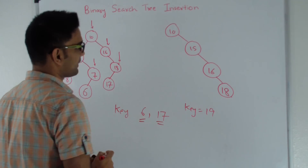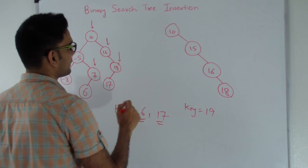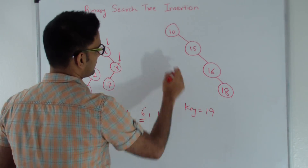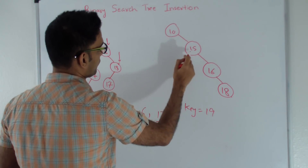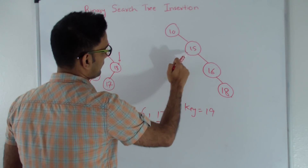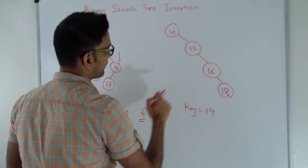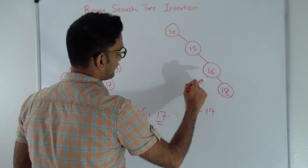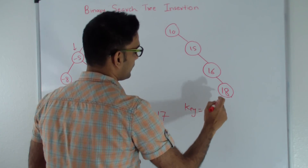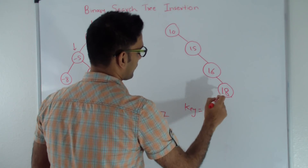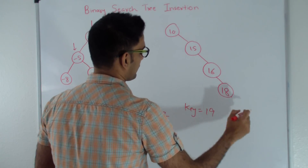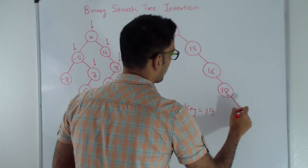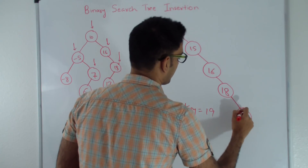Let's try inserting key 19. 19 is greater than 10 so we go right. It's greater than 15 so we go right. It's greater than 16, so we go right, and then it's greater than 18 so we go right and insert 19 right here.